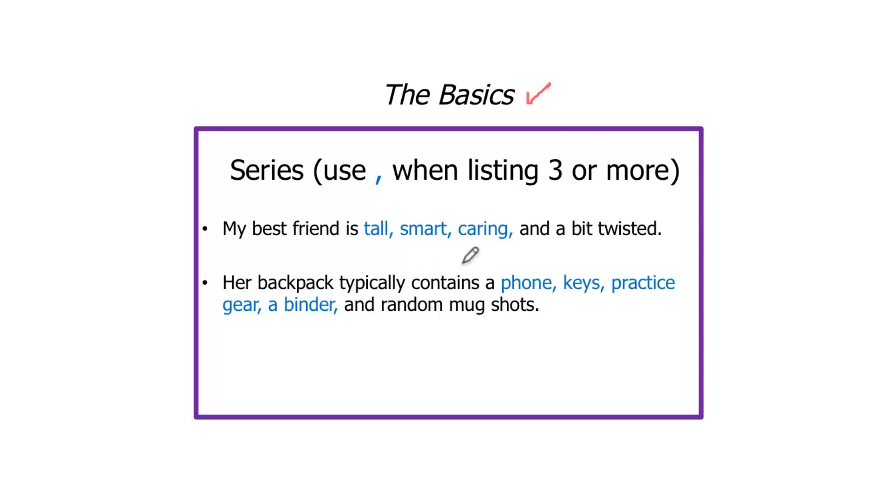This comma here before the 'and,' that's an optional comma. The ACT is not going to test you on it. I always include this comma, just I think it's easier to remember that there is a comma after each of these descriptions. Her backpack typically contains a phone, keys, practice gear, a binder, and random mugshots. Practice gear, that's two words, but it's one concept. And that's why we don't have a comma here.